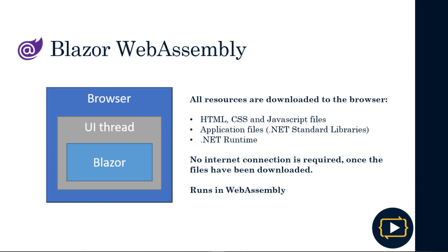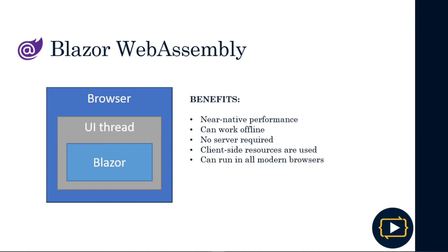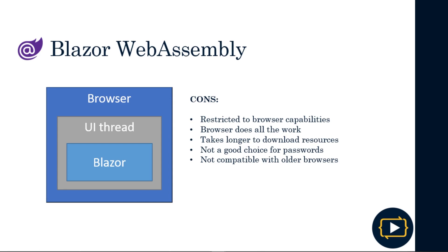Speaking of the features of this type of project, firstly, all resources are downloaded to the browser — the HTML, CSS, and JavaScript files, as well as the .NET runtime along with each file of the application or required class libraries. The .NET runtime runs on WebAssembly providing an environment where, once the application is downloaded, an internet connection is not required. Among the cons: the browser restricts capabilities; the .NET runtime and all class libraries create a longer resource download time; storing sensitive information such as passwords is inadvisable; and very old browsers may not be capable of running Blazor WebAssembly applications.